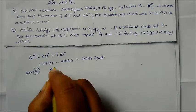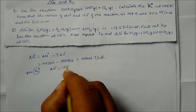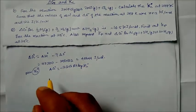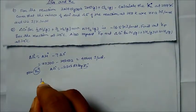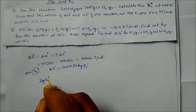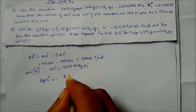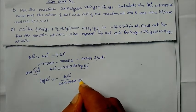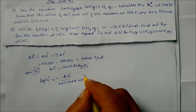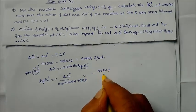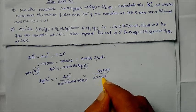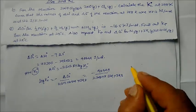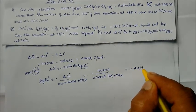For Kc, we use the formula ΔG° = −2.303 RT log Kc. Rearranging: log Kc = −ΔG° / (2.303 × 8.314 × 298) = −40844 / (2.303 × 8.314 × 298), giving log Kc = −7.15.